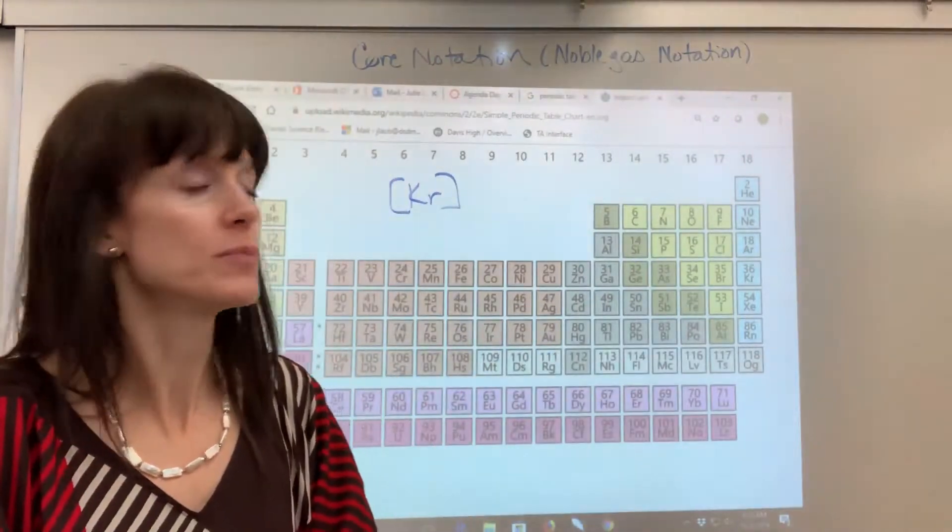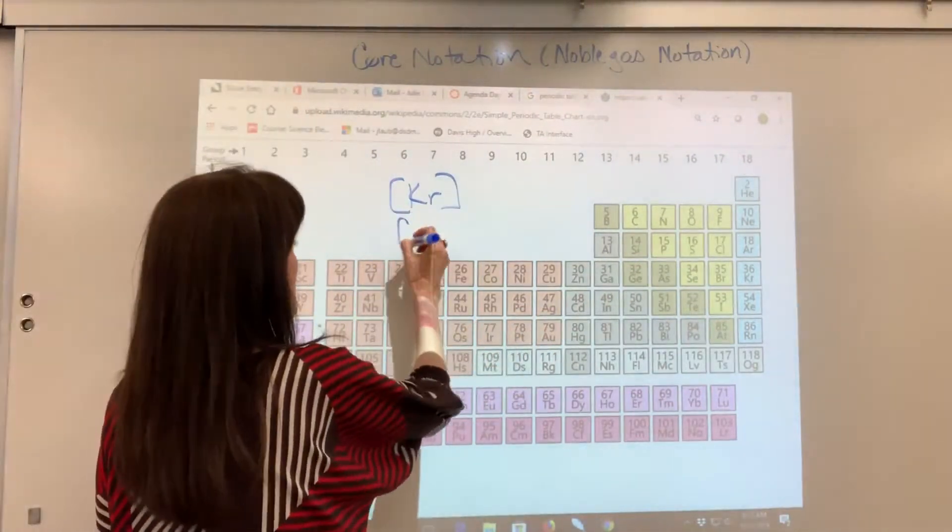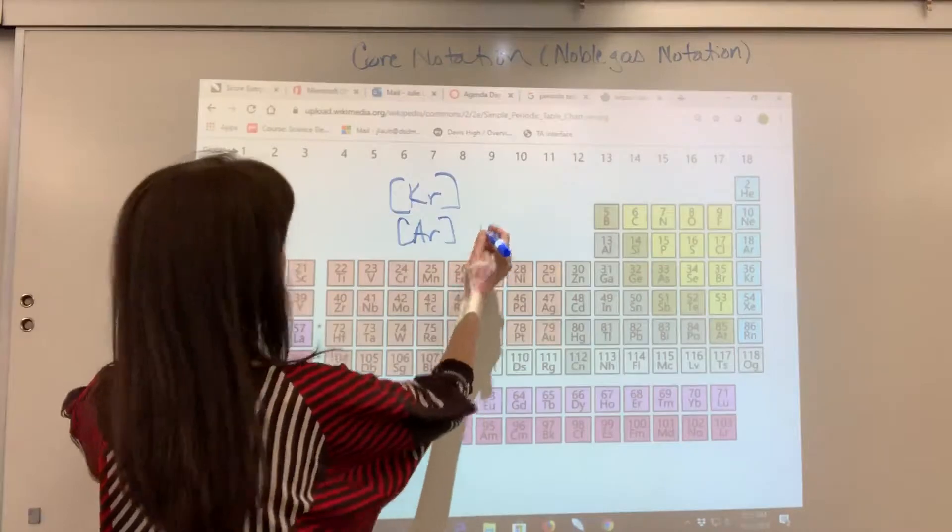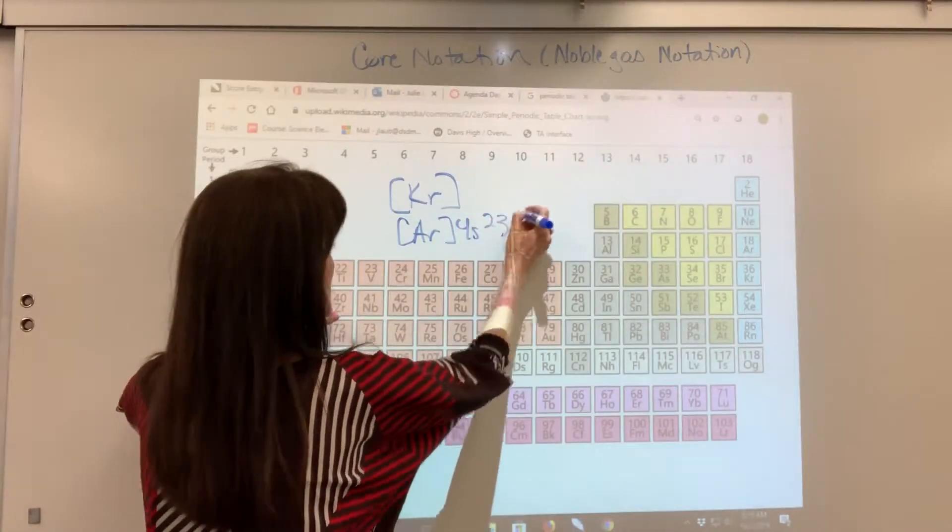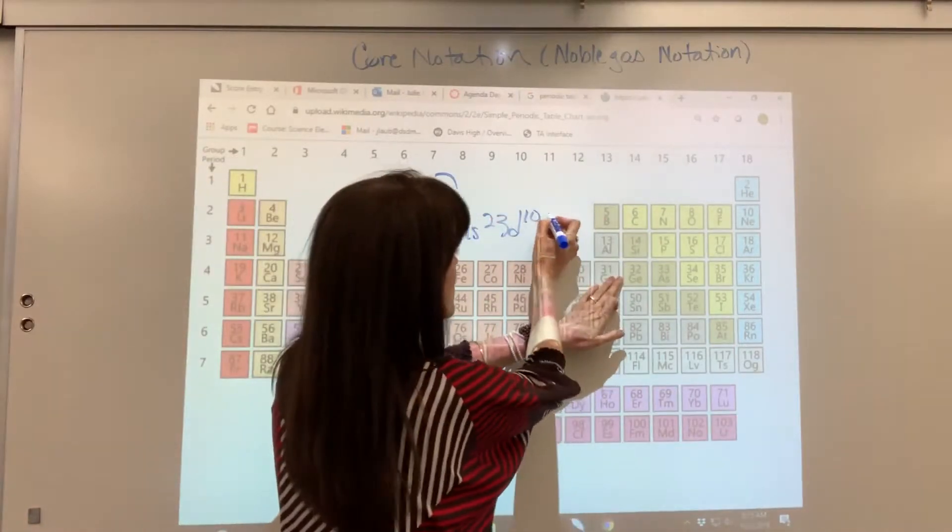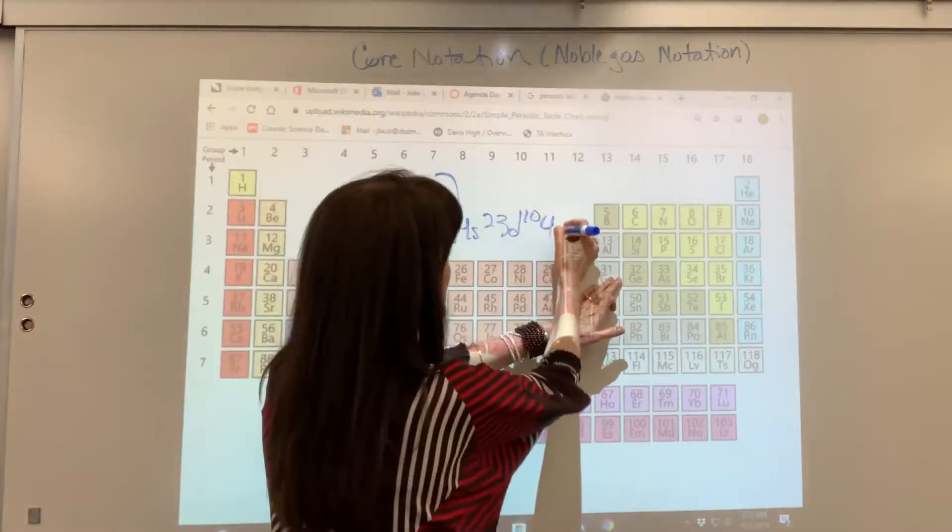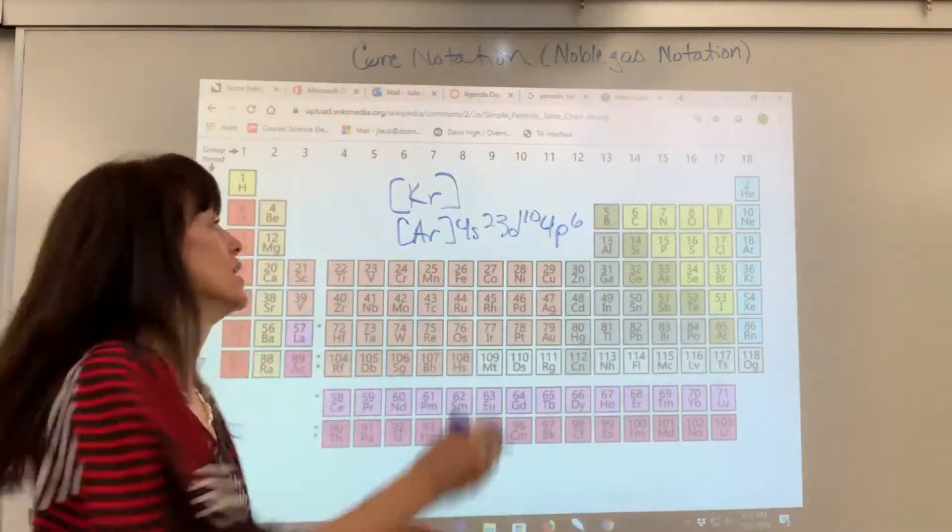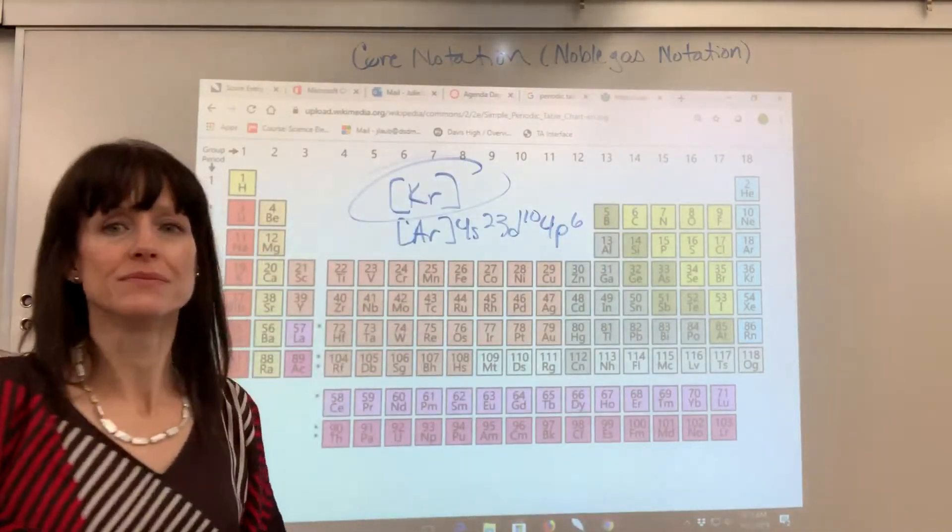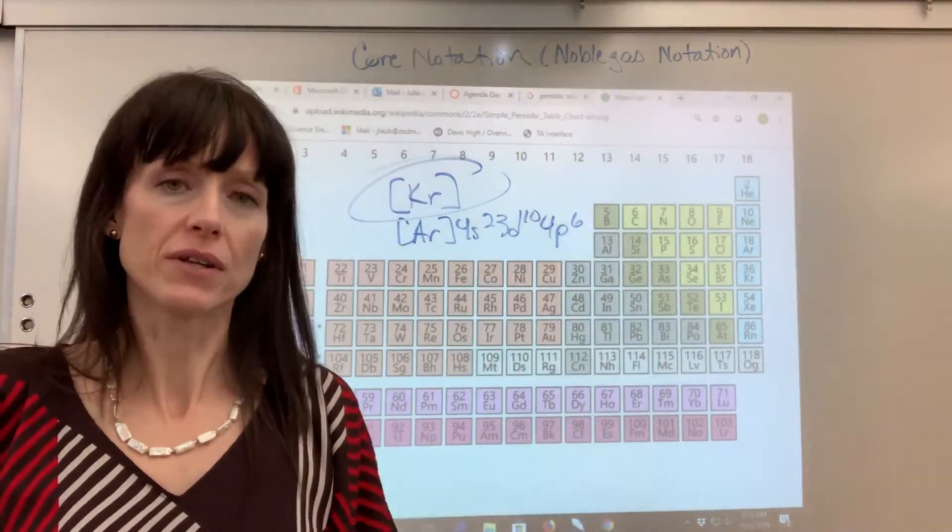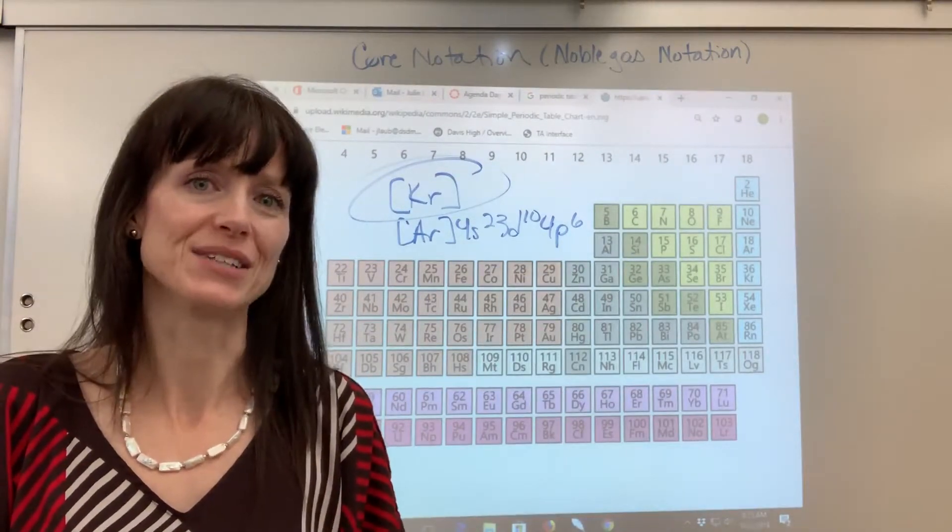Now, I have seen people write the argon and then do the 4s2, 3d10, oh, excuse me, 4p6. I have seen that, but this is acceptable. That is acceptable. If you're given a noble gas, just put it in brackets and that's the core notation.